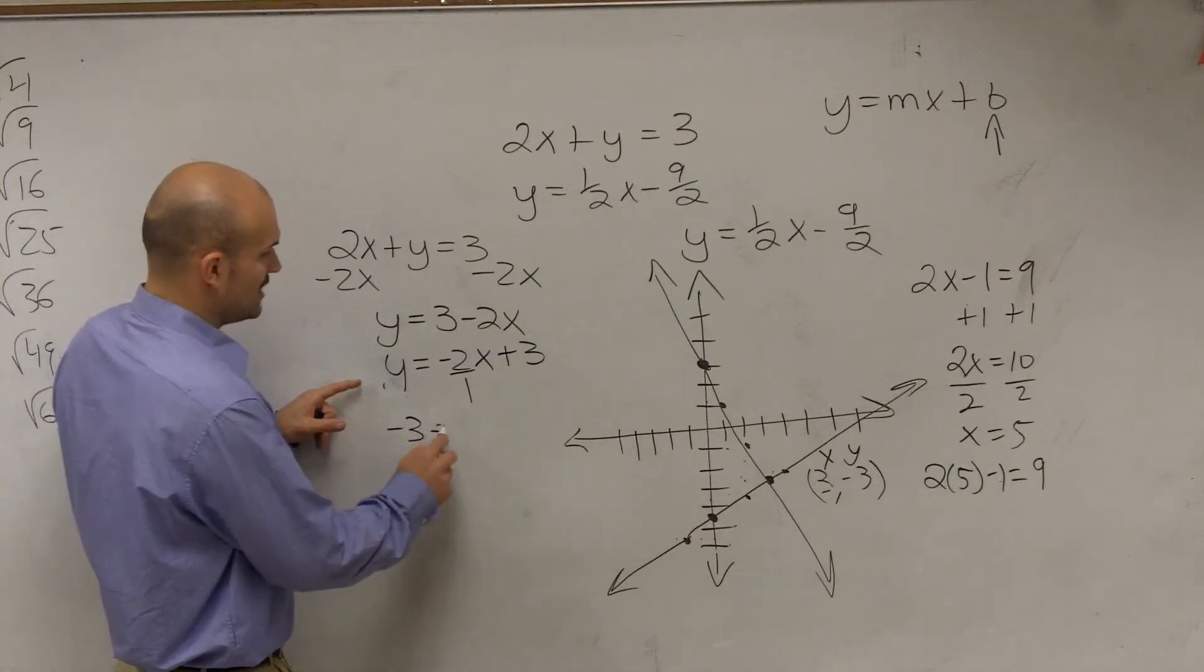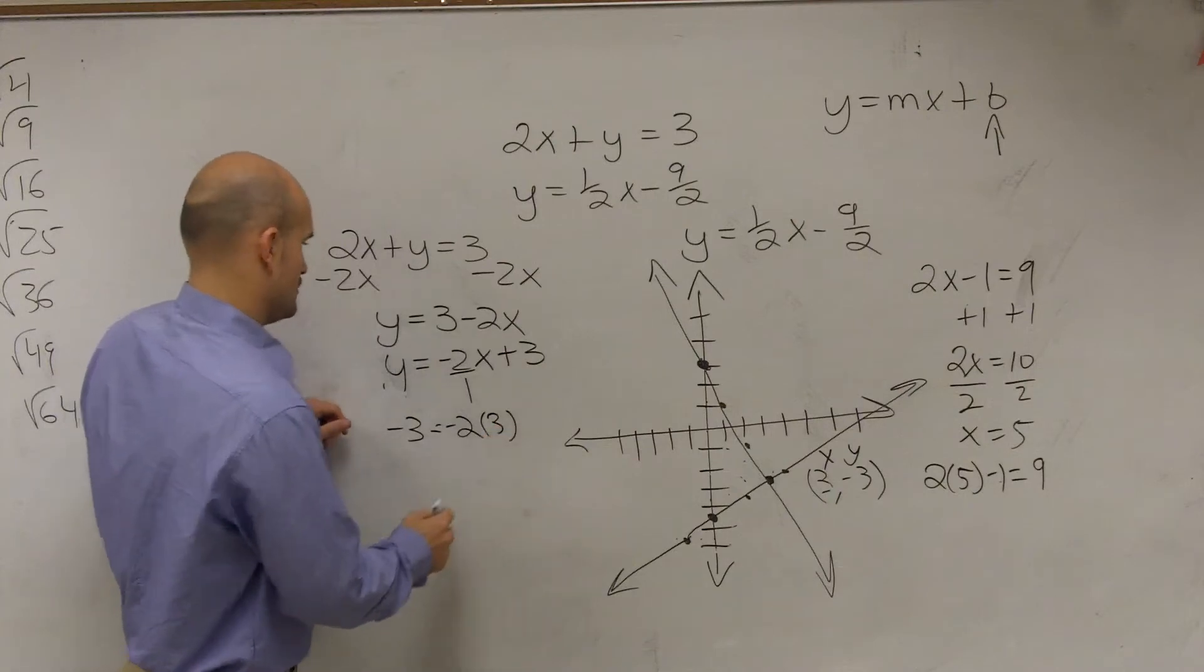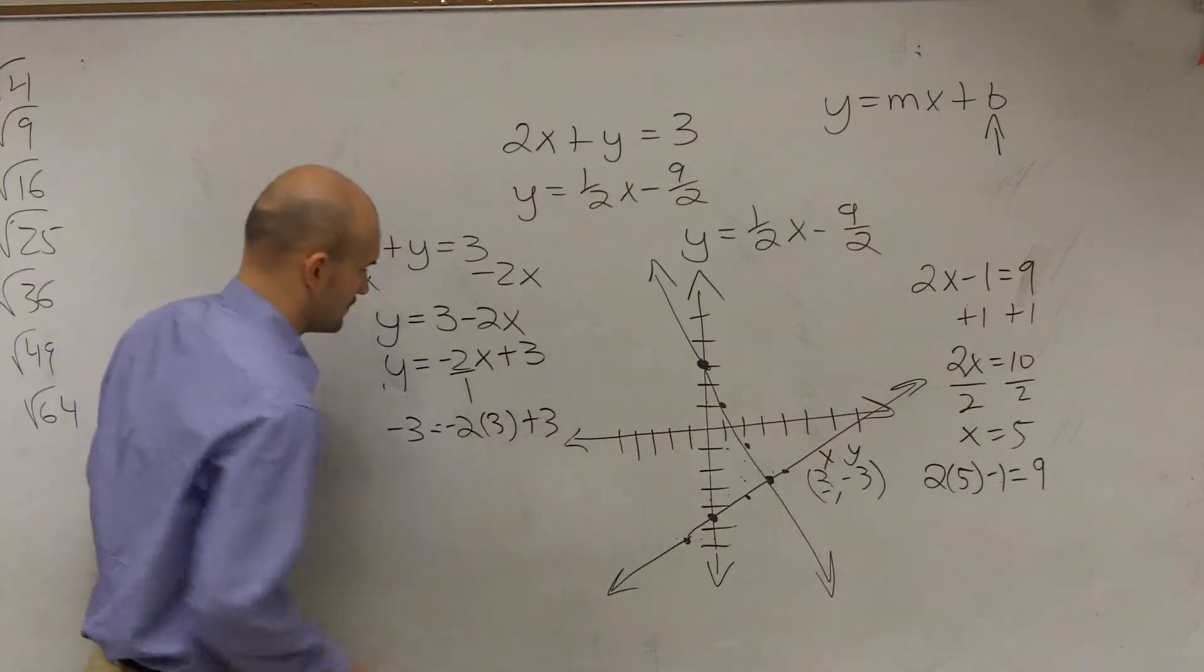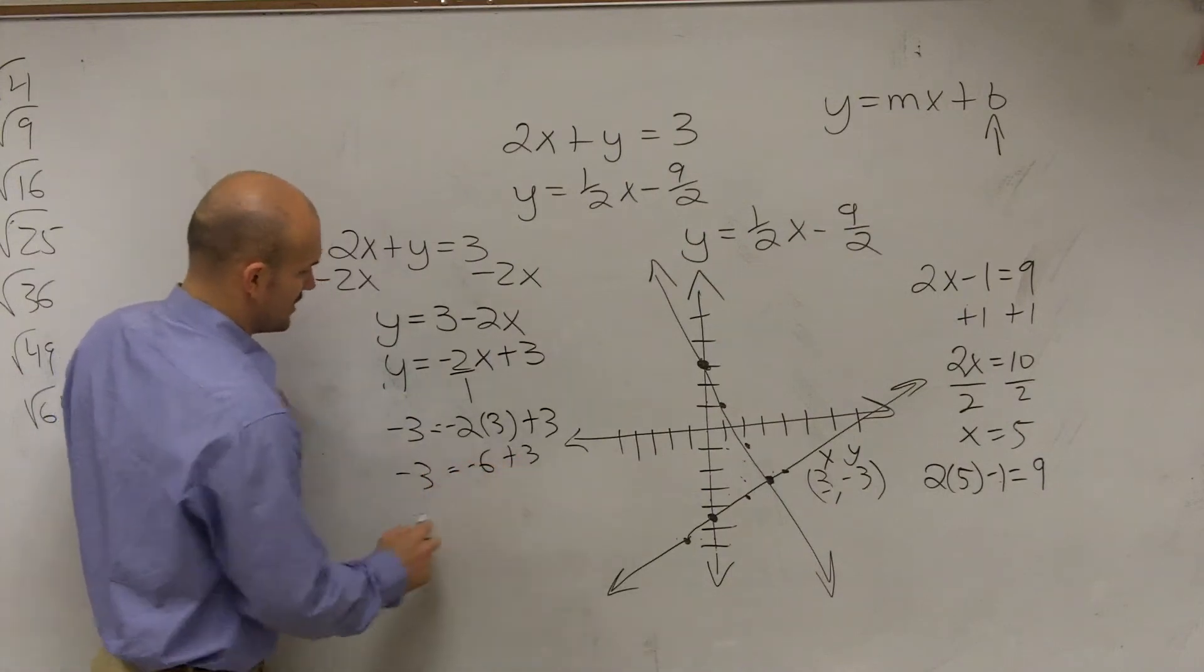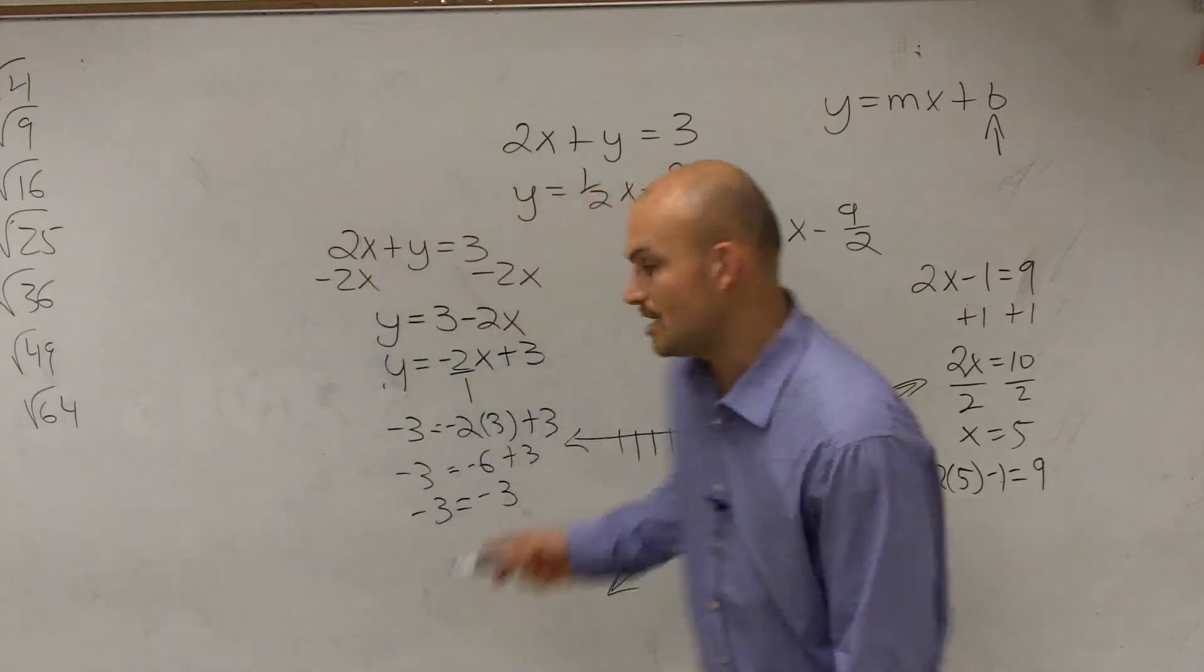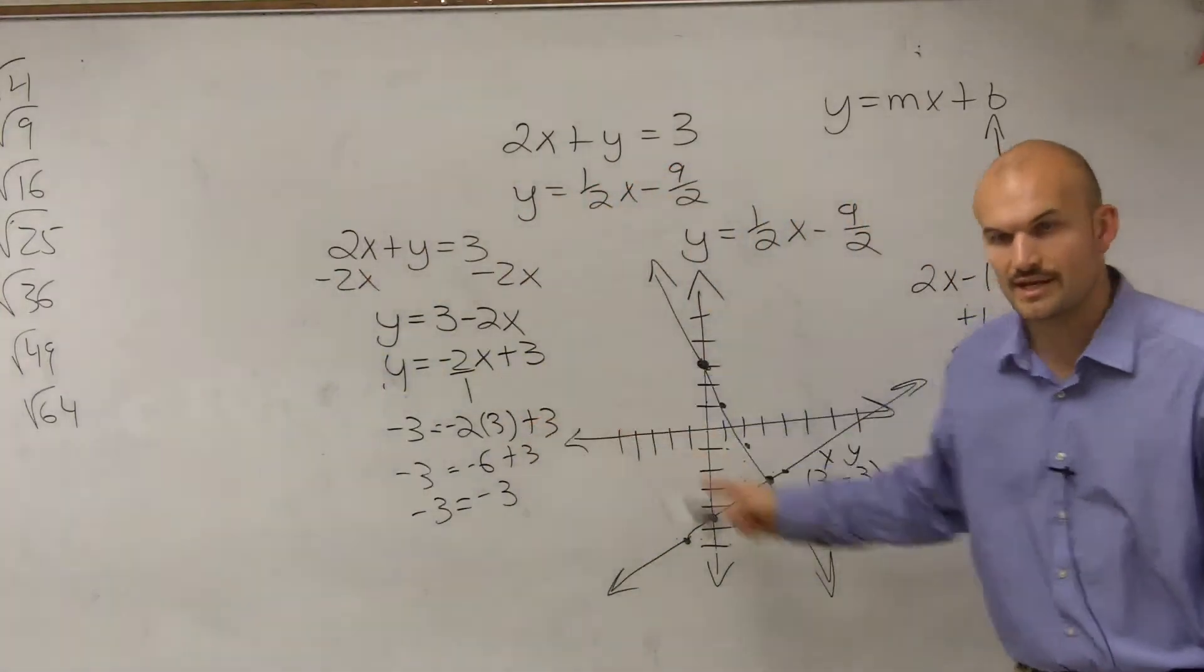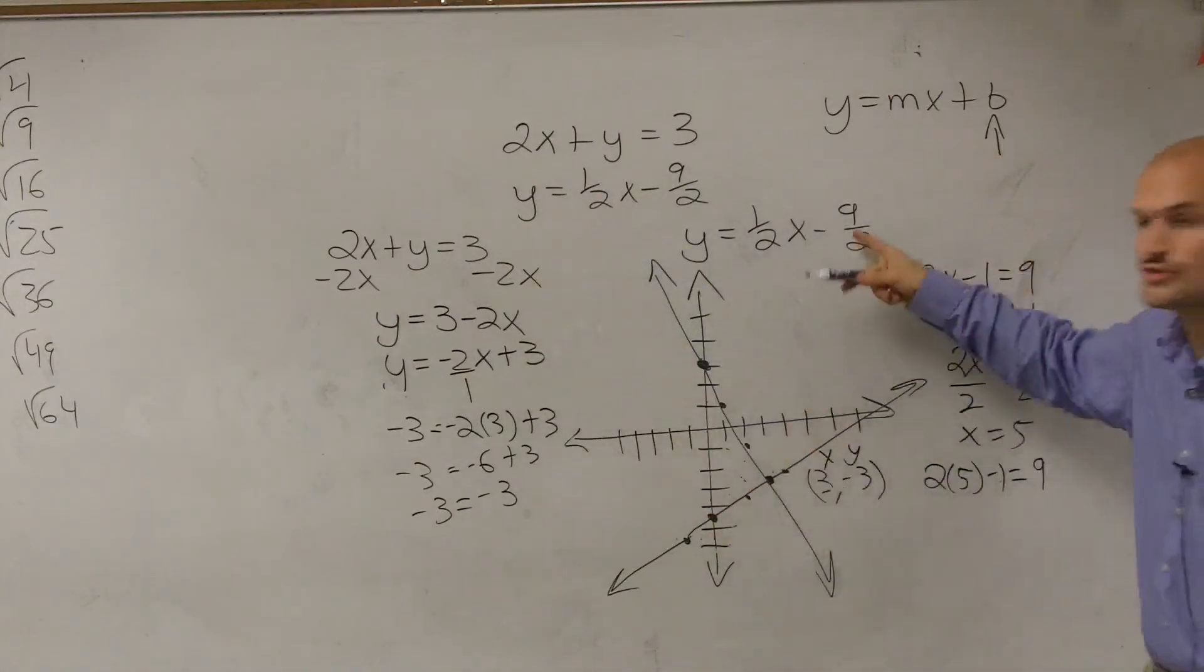Negative 3 equals negative 2 times 3 plus 3. Negative 3 equals negative 6 plus 3. Negative 3 equals negative 3. Do you see, Austin, how that makes it true for that equation? That point is true for this equation. It's also true for this equation.